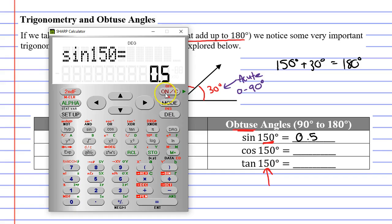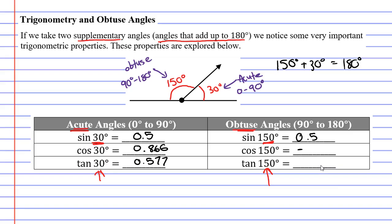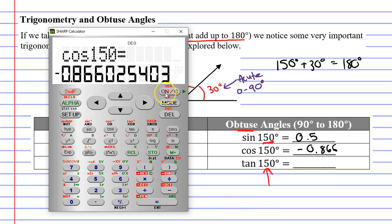Alright, let's see what happens when we do it for cos. Cos of 150. We get negative 0.866. So negative 0.866. And finally tan of 150. We get negative 0.577.